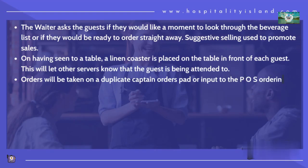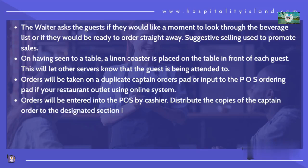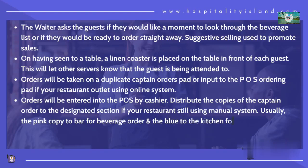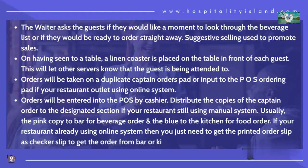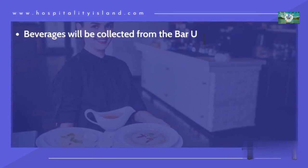Step 6: Orders will be taken on a duplicate captain orders pad or input to the POS ordering pad if the restaurant outlet is using an online system. Step 7: Orders will be entered into the POS by the cashier, and copies of the captain order distributed to the designated section if the restaurant is still using a manual system — usually the pink copy to the bar for beverage orders and the blue copy to the kitchen for food orders. If using an online system, you just need to get the printed order slip as a checker slip.